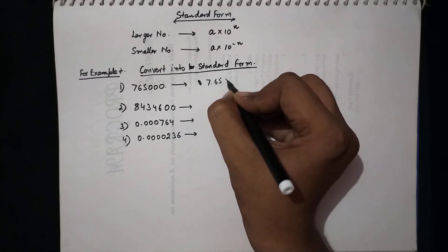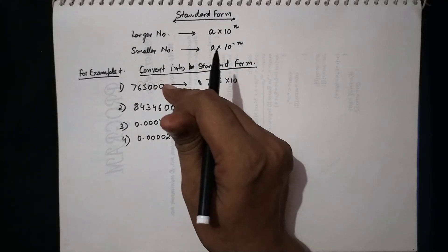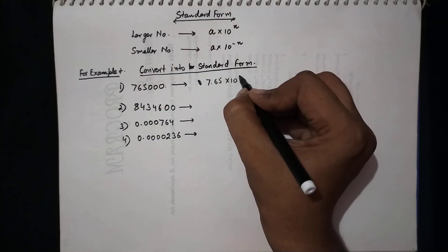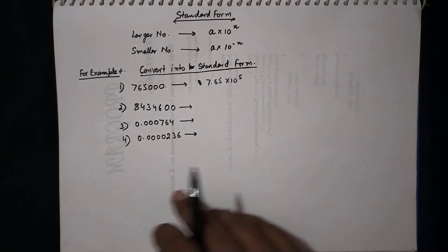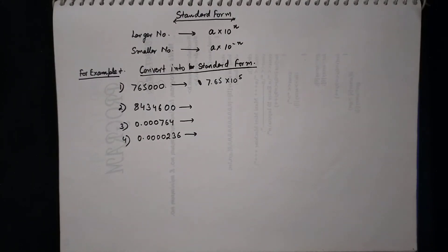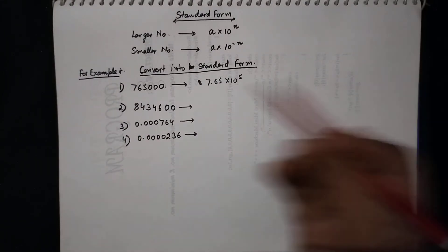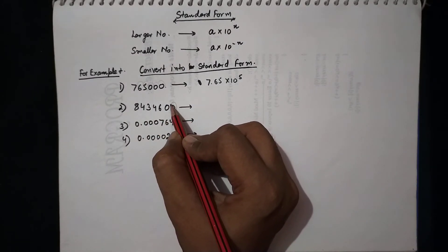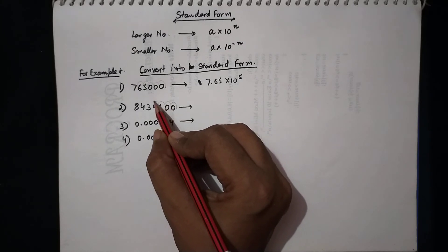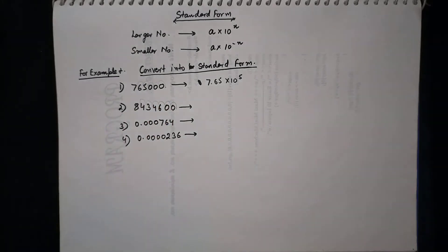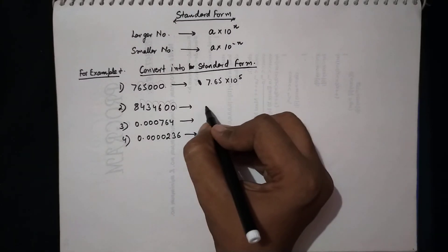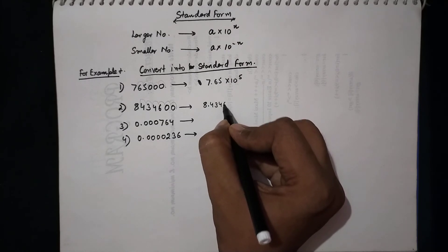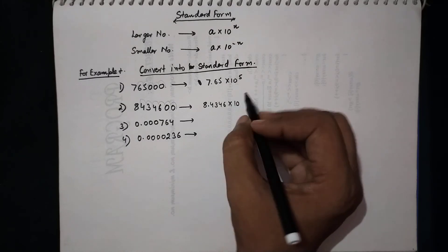For a large number, we shift the decimal to get one non-zero digit before it and count the shifts. Shifting 5 places gives 7.65 × 10^5. Similarly, shifting 6 places gives 8.4346 × 10^6. Since these are larger numbers, the power is positive.